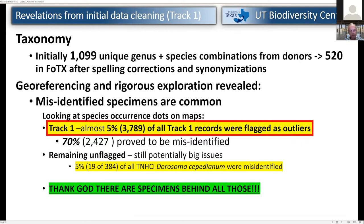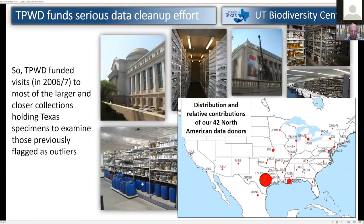We got busy cleaning up the data. It wasn't surprising that all the variations on genus-species combinations from donors were messy — we cleaned it up and about halved the total number of unique genus-species combinations. The georeferencing took a long time but was extremely valuable, allowing us to start mapping and looking for outlier records. Notably, almost 5% of things we flagged as outliers turned out to be misidentified — or rather, 70% of those we flagged as outliers turned out to be misidentified. Because we have specimens, we can go back and check those identifications.